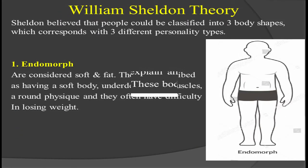Now let's see what an endomorph is. Sheldon believed that people could be classified into three body shapes, which correspond with three different personality types. The first one is endomorph. Endomorphs are considered soft and fat. They are described as having a soft body, underdeveloped muscles, and a round physique, and they often have difficulty losing weight.